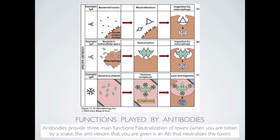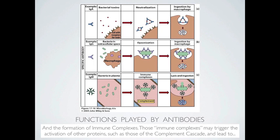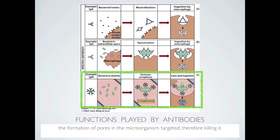Antibodies provide three main functions. First, neutralization of toxins — a good example is when you are bitten by a snake, the anti-venom given is an antibody that neutralizes the toxin. Second, opsonization, which is the ability of antibodies to coat bacteria and other infectious agents, making it easier for phagocytic cells to engulf and eliminate them. Third, the formation of immune complexes, which may trigger the activation of complement proteins and lead to the formation of pores in the targeted microorganism, killing it.